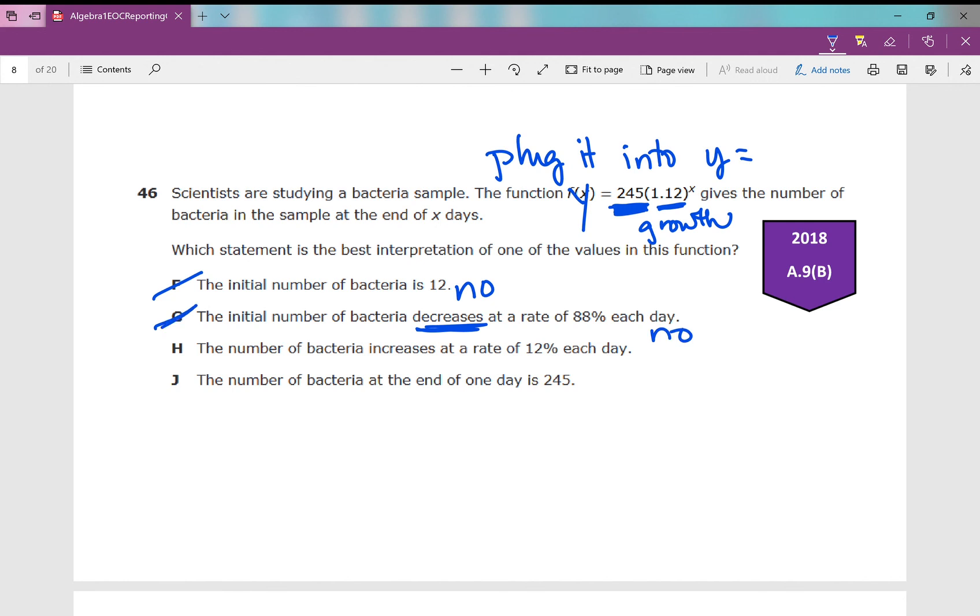H, the number of bacteria increases at a rate of 12% each day. Well, let's see. If I do 1.12 minus 1, I get 0.12 as a decimal. If I convert that back to a percent, that's 12%. That's a growth of 12%. H is my answer.